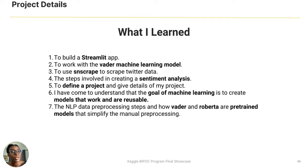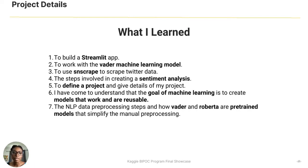What I've learned so far: I've learned to build a Streamlit app and to deploy my app both on Streamlit and Heroku. I've come to learn to use GitHub and how to work with the VADER machine learning model. I understand how to use SNScrape to scrape Twitter and avoid the limitations of the Twitter API. I understand the steps involved in creating a sentiment analysis, how to define and document a project, and that the goal of machine learning is to create models that work and are reusable. I also understand NLP data pre-processing steps and how VADER and RoBERTa are pre-trained models that simplify manual processing.